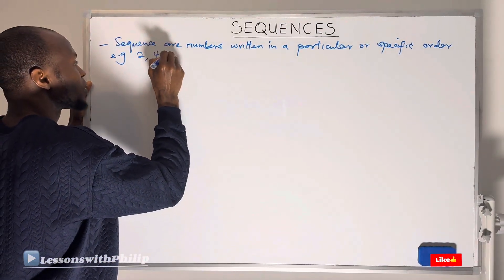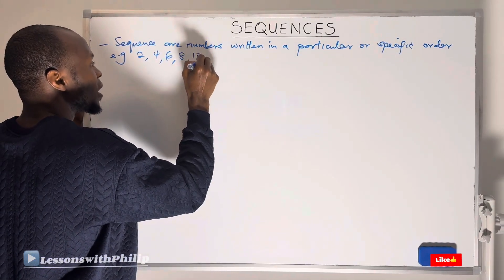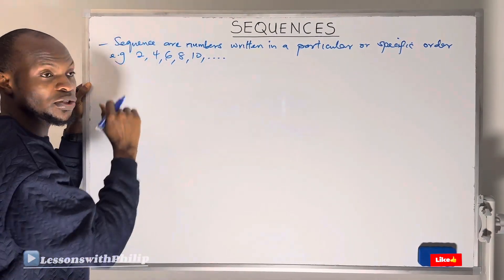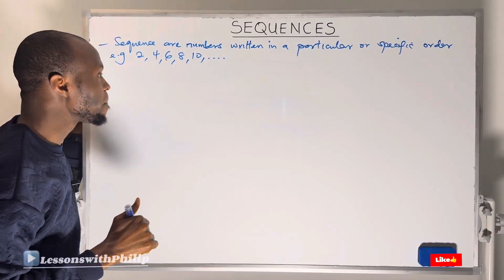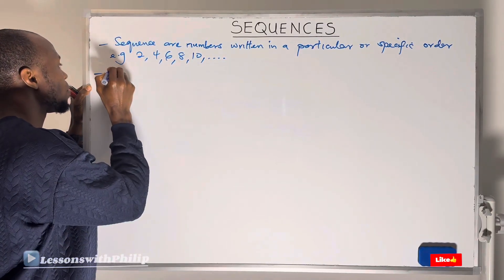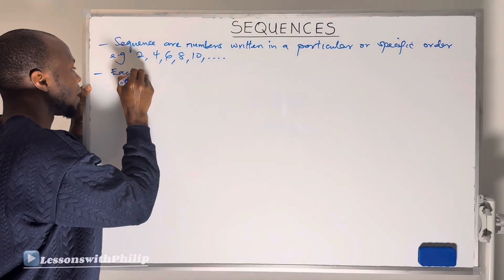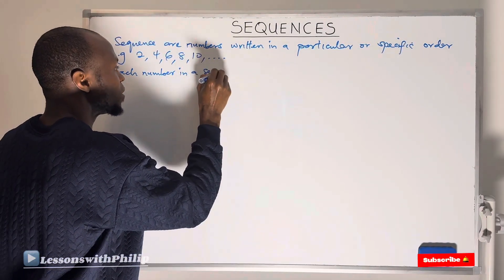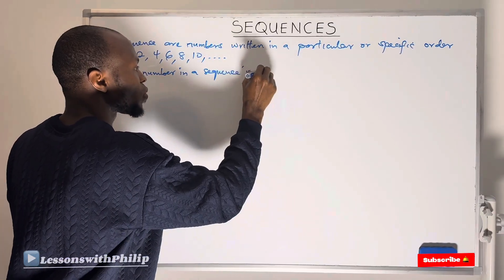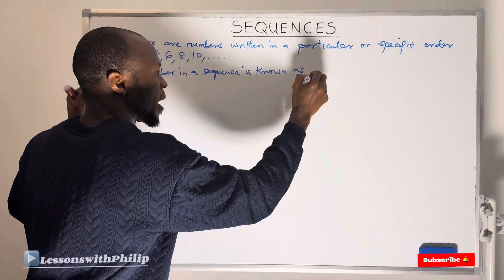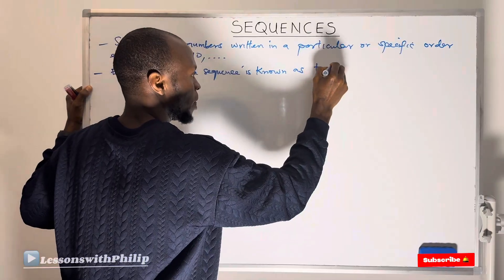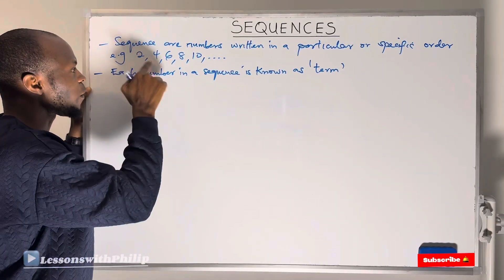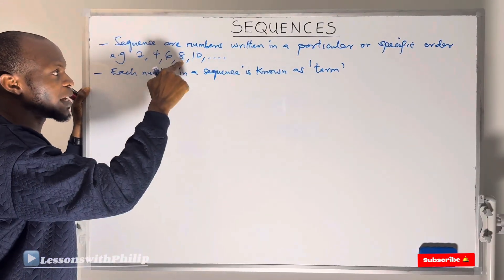For example, if I write 2, 4, 6, 8, 10, and so forth, this kind of arrangement is known as a sequence. Another thing you need to take note is that each number in a sequence is known as a term.